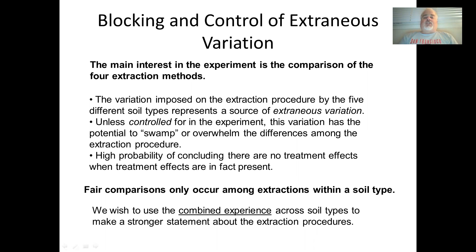The main interest in the experiment is the comparison of four extraction methods — water versus the three chemicals. The variation imposed on the extraction procedure by the five different soil types represents a source of extraneous variation. If there are five very different soil types, there might be big differences in how efficient each extraction chemical is, so the different soil types need to be kept separate in the experiment.